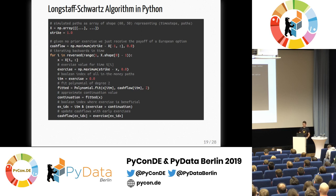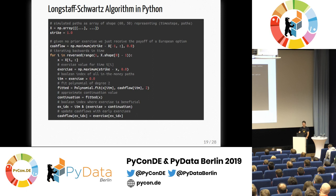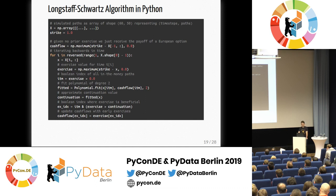Now I'm moving backwards from the last point in time closer to today. I first compute the exercise value on the day — simple, just plug into the payoff function. Then I look at each path that is in the money, meaning the payoff would be larger than zero. I take out all these in-the-money paths and fit a polynomial of my coin value against the cash flow from the next time step. This fitted variable carries all the information about my approximated continuation value. This is the core thing of this algorithm.